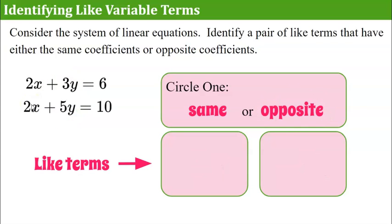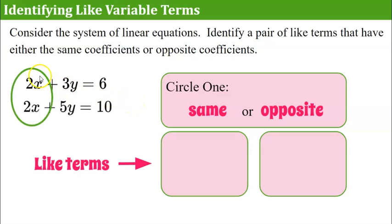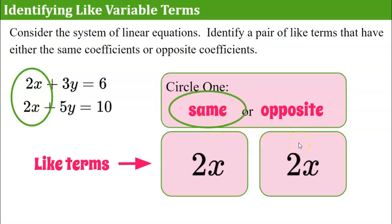Let's try another one. Consider this system of linear equations. Identify a pair of like terms that either have the same coefficients or opposite coefficients. Please pause now and come back when you're done. Welcome back! The x variable terms 2x and 2x have the same coefficient — 2 and 2 are the same. The y variable terms have coefficients 3 and 5, which are not the same and not opposite.